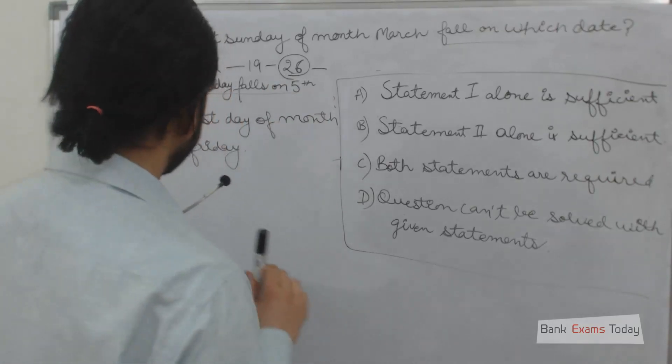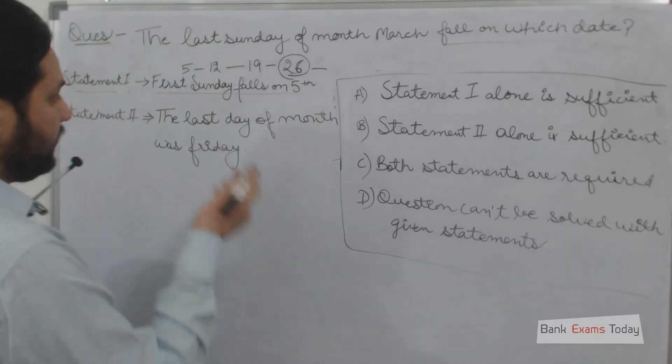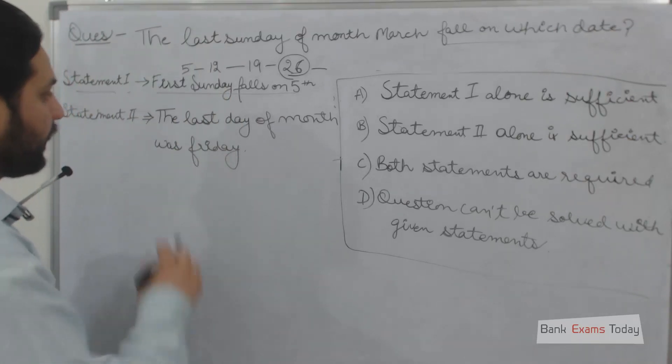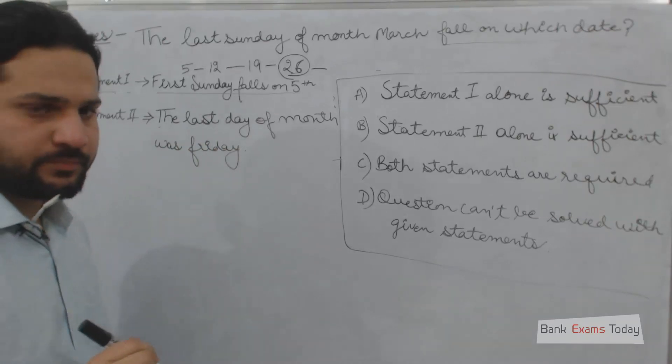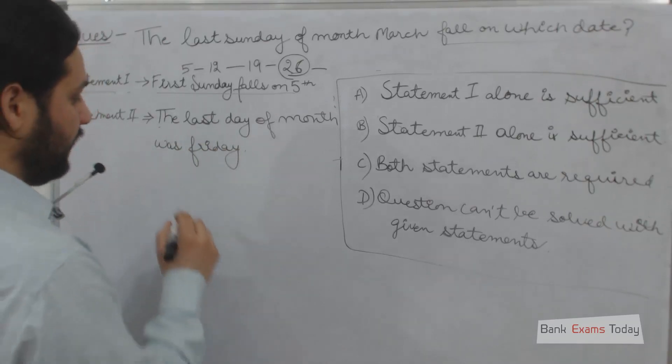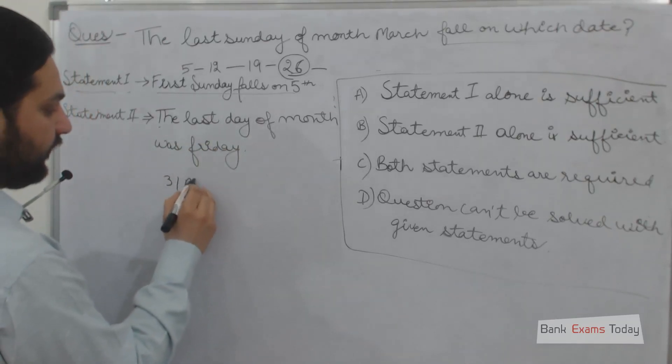Statement 2: The last day of the month was Friday. That means 31st March was Friday.